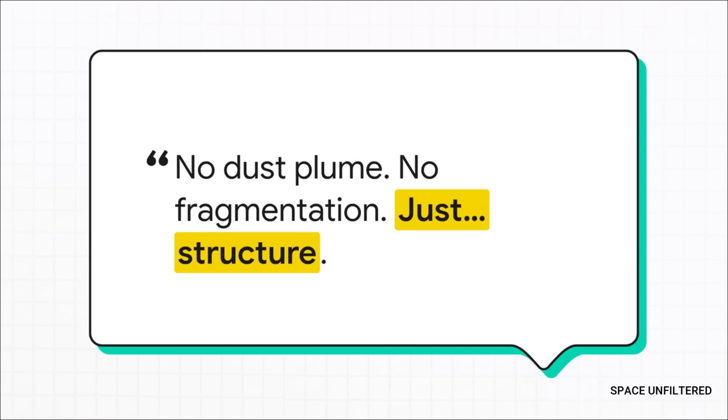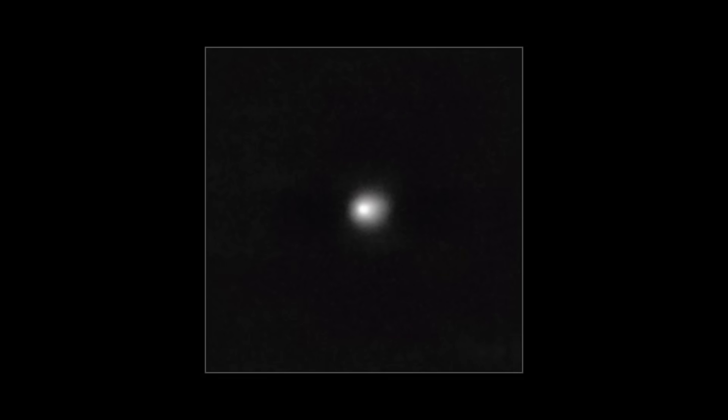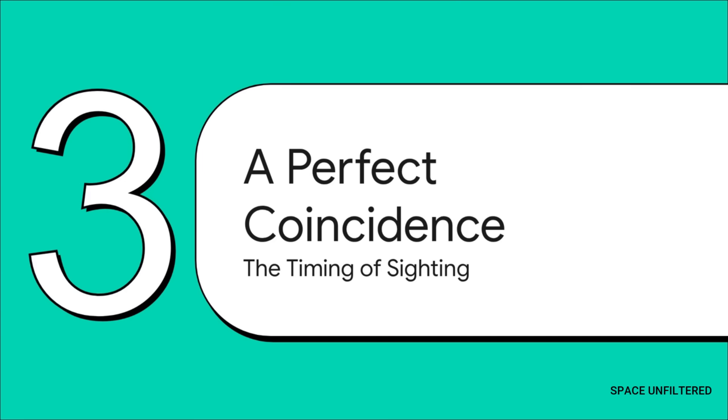But it was more than just the timing. As one post pointed out, the object didn't look like a typical fuzzy comet. It didn't seem to have a dusty tail. Instead, the observation was that it had structure. And that word, structure, is what really fueled the idea that Perseverance had caught a picture of something truly unique.